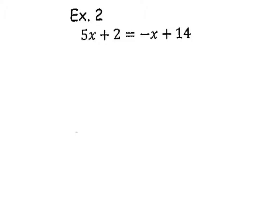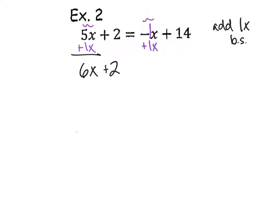5x plus 2 equals negative x plus 14. First step: move the smaller variable. Please remember, this is like a negative 1 right there. Which variable is smaller? I've got a 5x and I've got a negative 1x. Negative 1x — it's a negative. So add 1x to both sides. That gives us 6x — 5 plus 1. The 2 is still there. The equal sign is still there. The 1s are gone. And then 14.